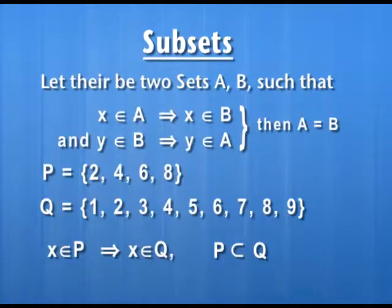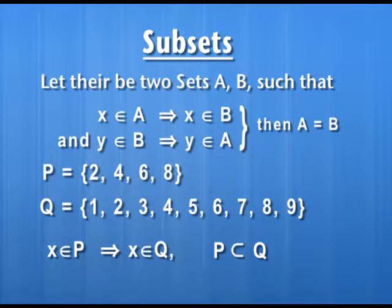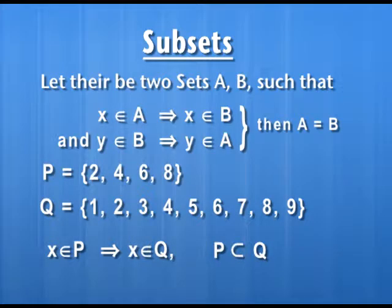Let us consider two sets P and Q. Set P contains four elements: 2, 4, 6, and 8, and set Q contains numbers 1, 2, 3 up to 9. We observe that all the elements of set P are included in set Q. Symbolically, x belonging to P implies x belongs to Q. In such cases, we say that set P is contained in set Q, and we write it as P ⊆ Q.